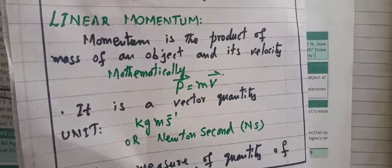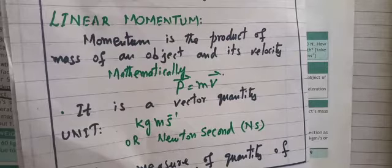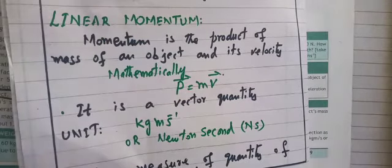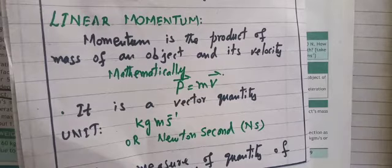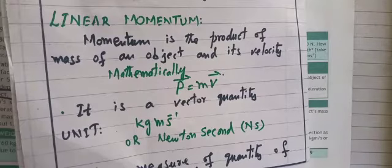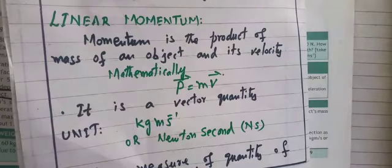Mass is a scalar quantity, velocity is a vector quantity, and the product of both — momentum — is also a vector quantity. Momentum also has a direction. So momentum is a measure of the quantity of motion. So it is a vector quantity: P⃗ = mv⃗. We write an arrow over P and over V because they are vector quantities, but not over m because mass is scalar.